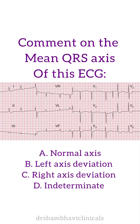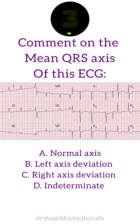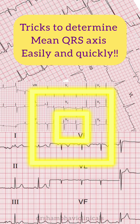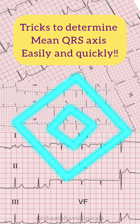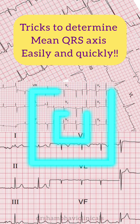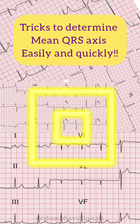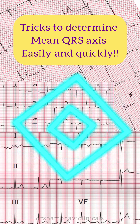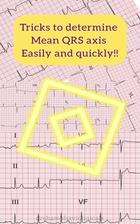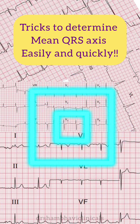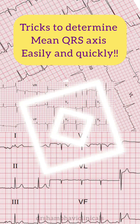Can you comment on the main QRS axis of this ECG in the next 3 seconds? Before I tell you the trick, you need to have a bit of background information about ECG. If you already have some background information, then you can skip to 1 minute 15 seconds.